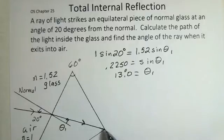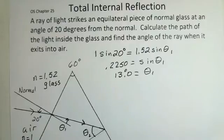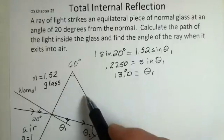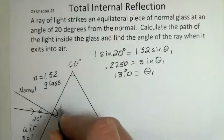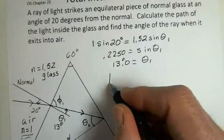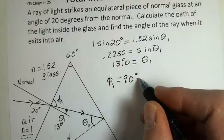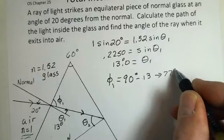I drew the ray across and it's now hitting the next surface. To decide what happens at this point, I need to know the angle there — let's call it theta 2. I'll work around the triangle to find it. I'll call this angle phi 1. Since theta 1 is 13 degrees, and the normal is 90 degrees away from the surface, phi 1 equals 90 minus 13, which gives 77 degrees.